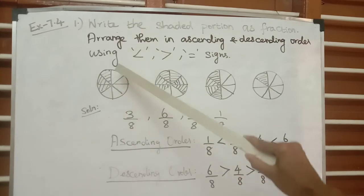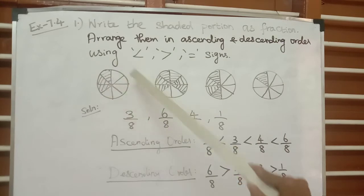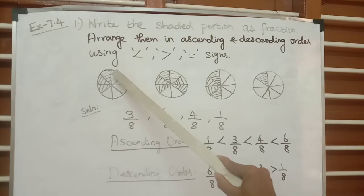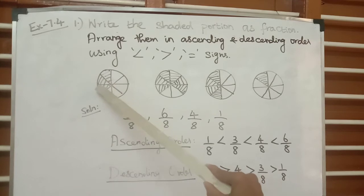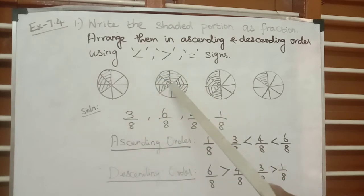For the first figure, you need to write the fraction of the shaded portion. First, count the total number of parts: 1, 2, 3, 4, 5, 6, 7, 8 — so there are 8 parts total. Out of these 8 parts, only 3 parts have been shaded — that is 1, 2, 3 — so the fraction is 3 by 8.